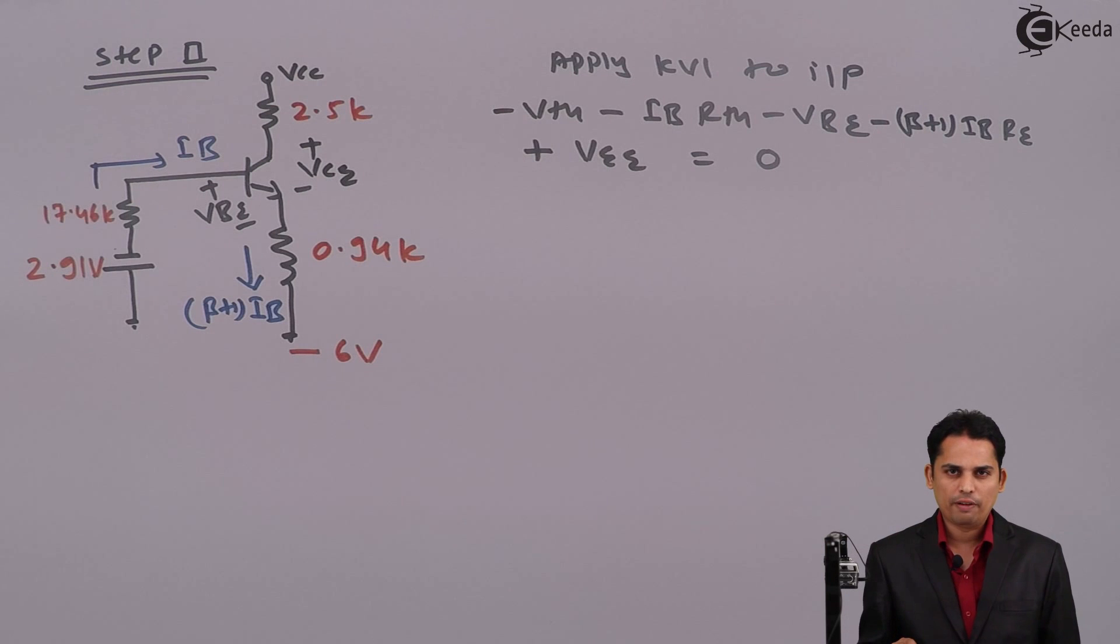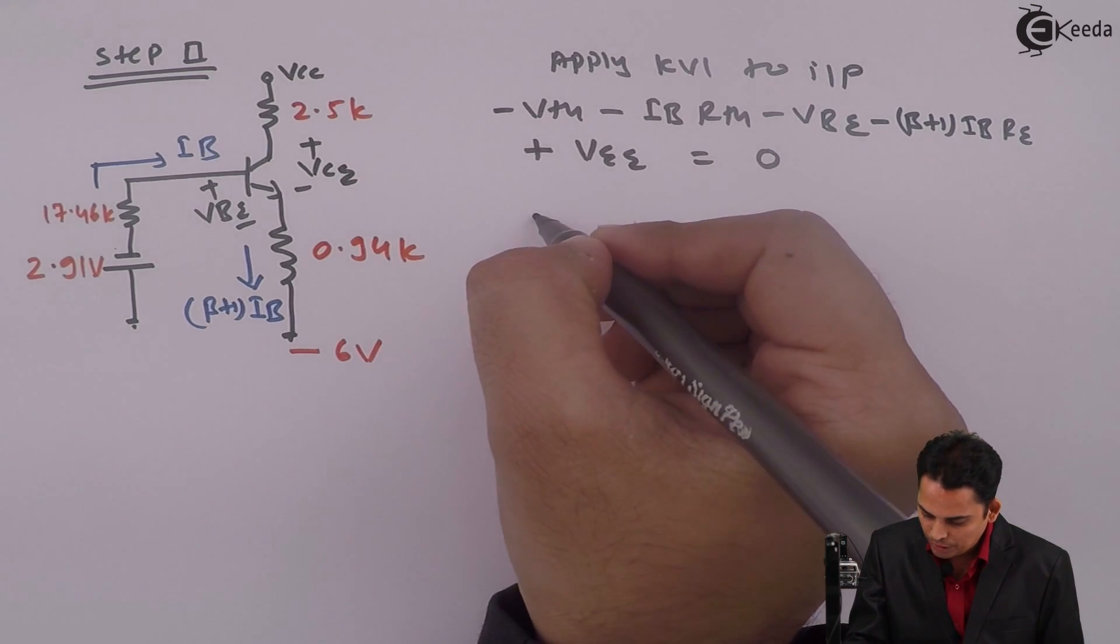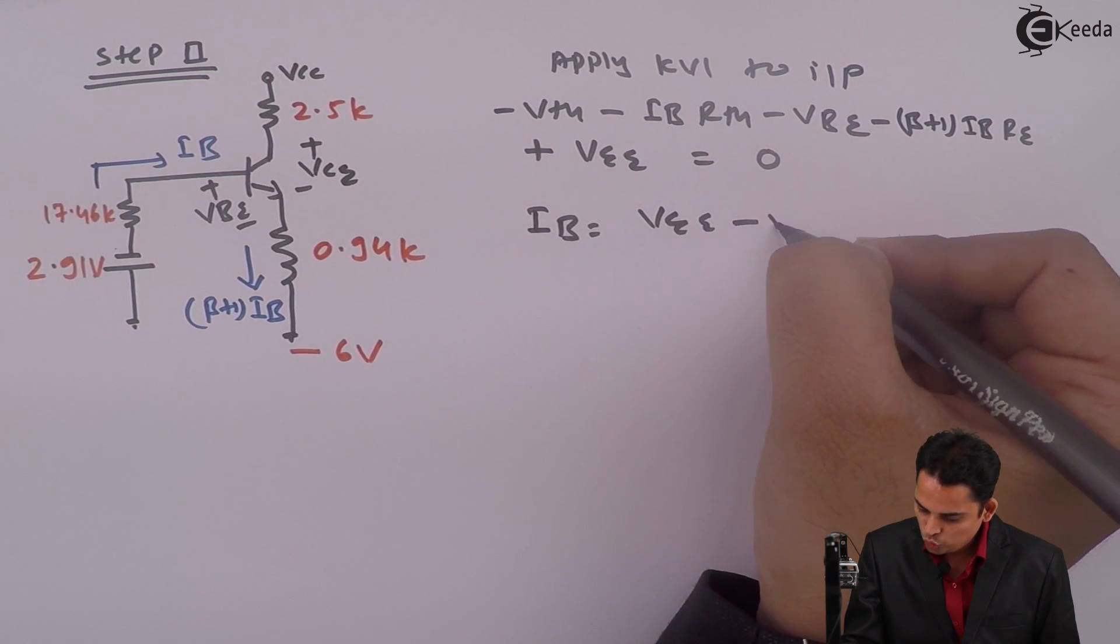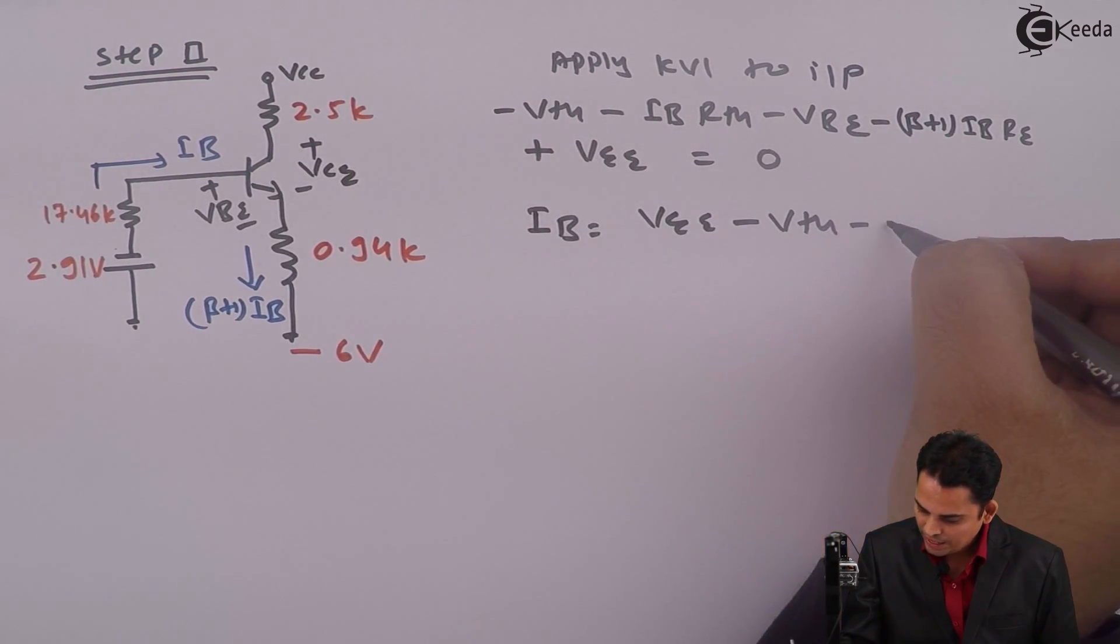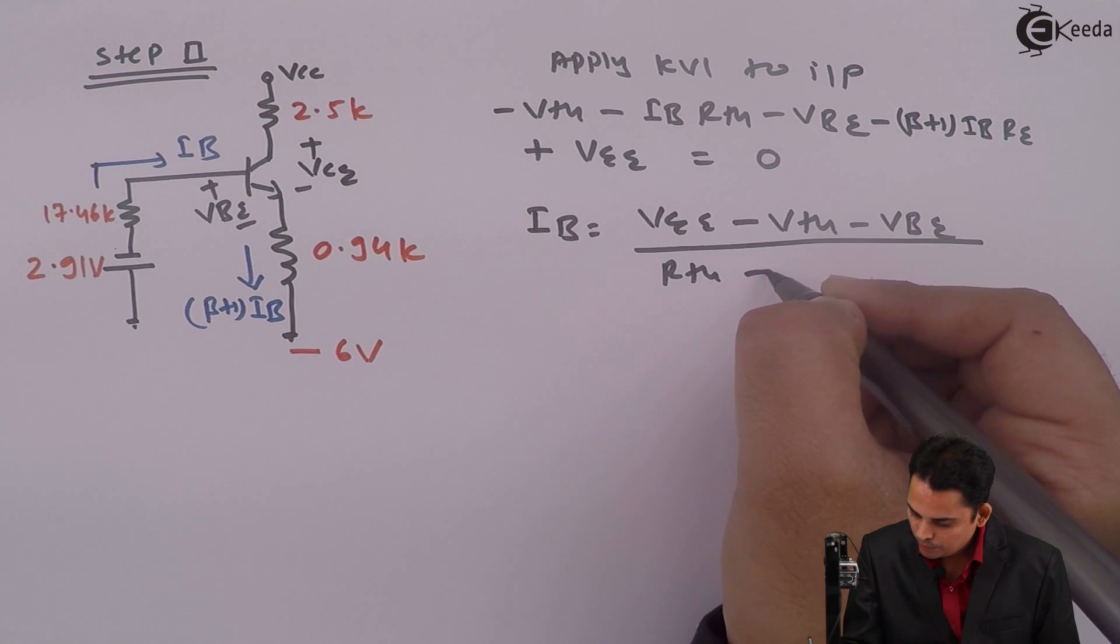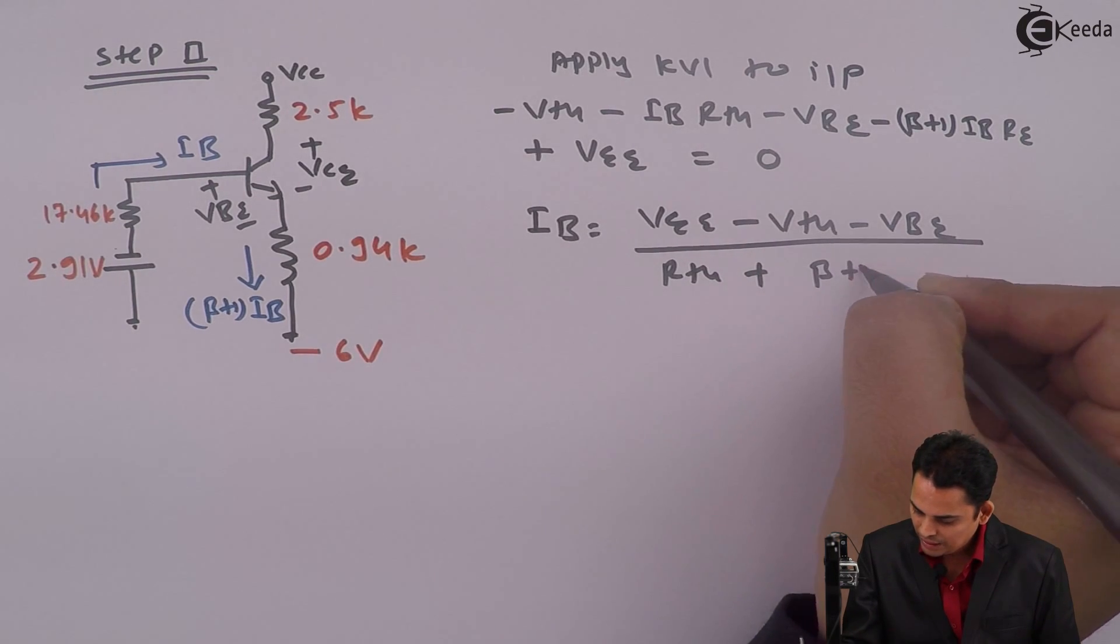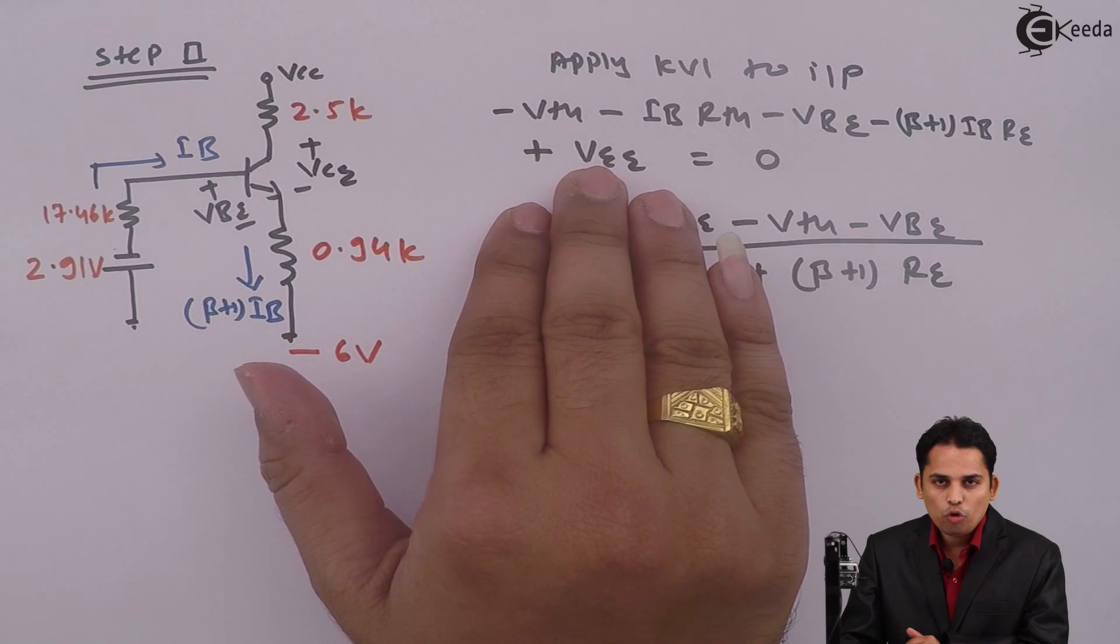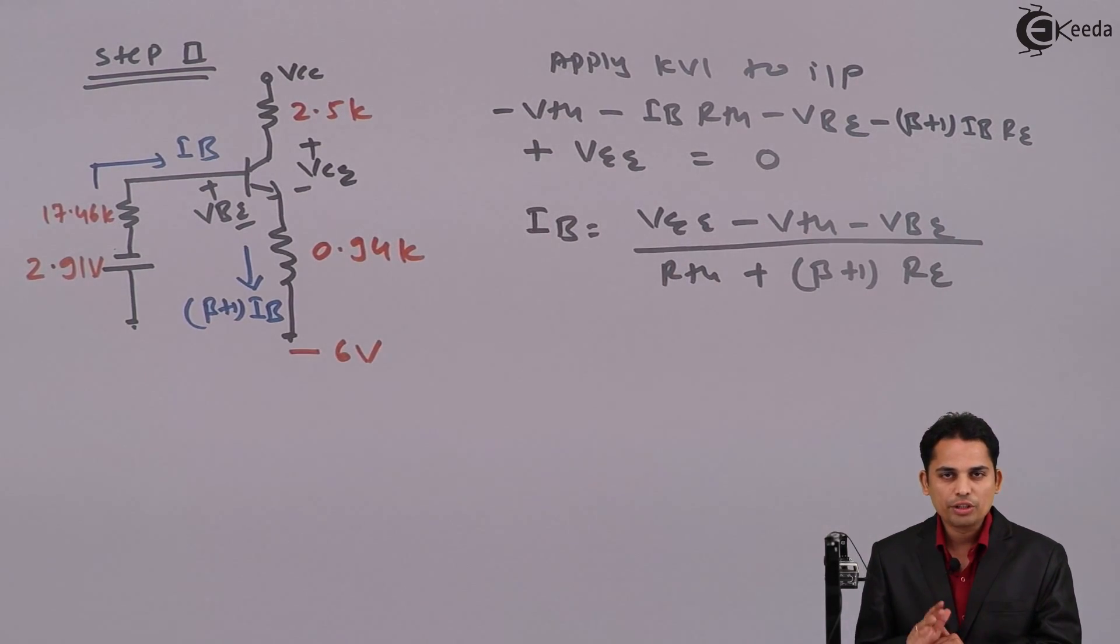Substitute the corresponding values or before substitute the values, let us write base current on the left hand side and all voltages on the right hand side. So, base current will become IB is equal to VEE minus VTH minus VBE divided by RTH plus beta plus 1 times of RE. This is very simple. What we have done is we have taken all voltages on one side whereas base current equation on the other side.